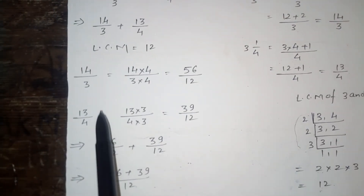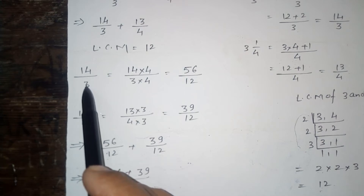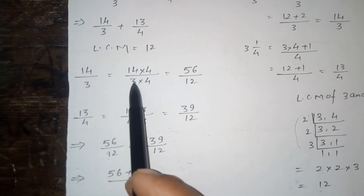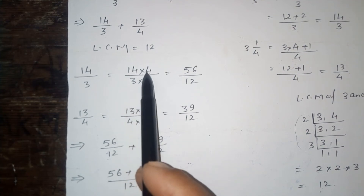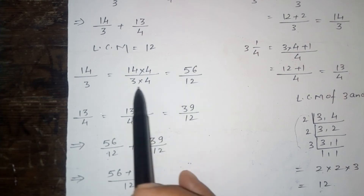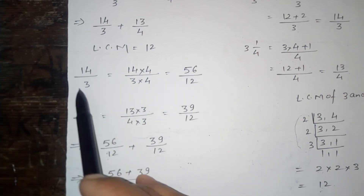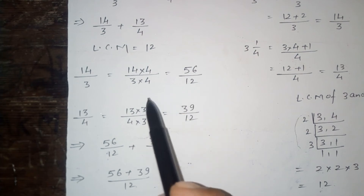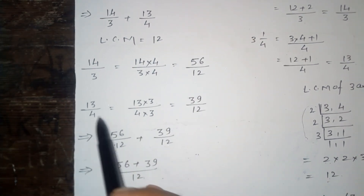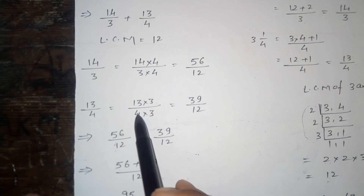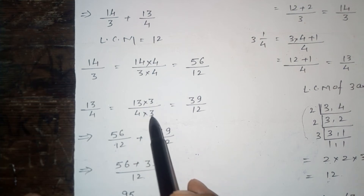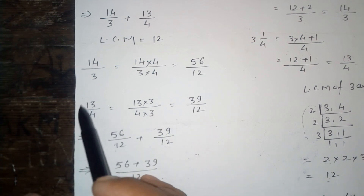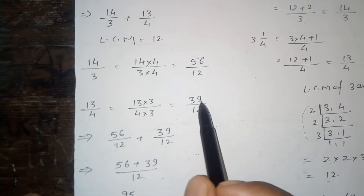Then, looking at 14 upon 3, multiply numerator and denominator by 4: 14 × 4 = 56, and 3 × 4 = 12. So 14 upon 3 equals 56 upon 12. Again, for 13 upon 4, multiply numerator and denominator by 3: 13 × 3 = 39, and 4 × 3 = 12. So 13 upon 4 equals 39 upon 12.